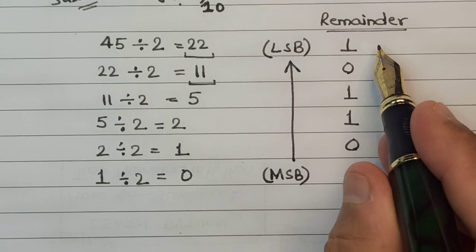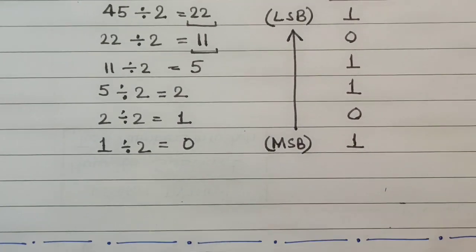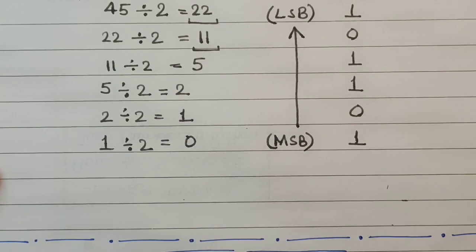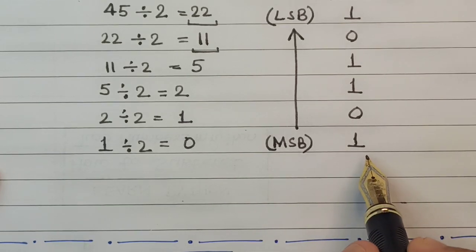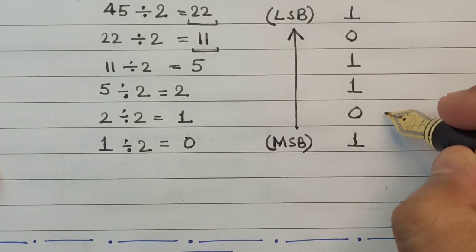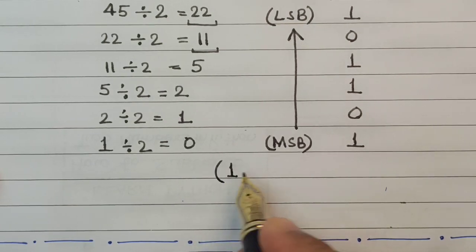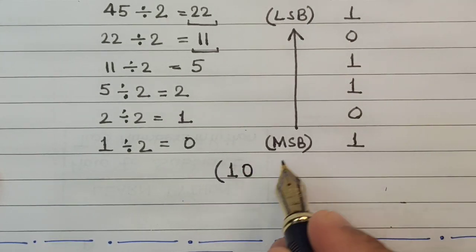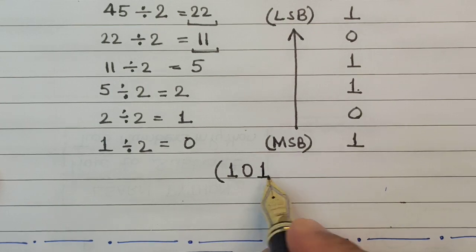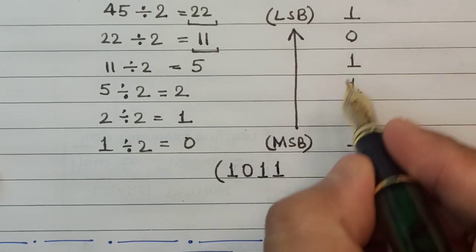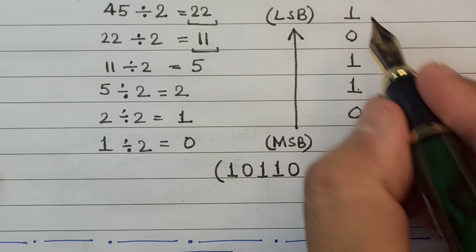In the same sequence we prepare a list of remainders. The very first digit since the MSB is 1, so we start writing the list from downwards to upwards. Here we have 1, then 0, then 1, then 1, then 0, and in the last we have a 1.